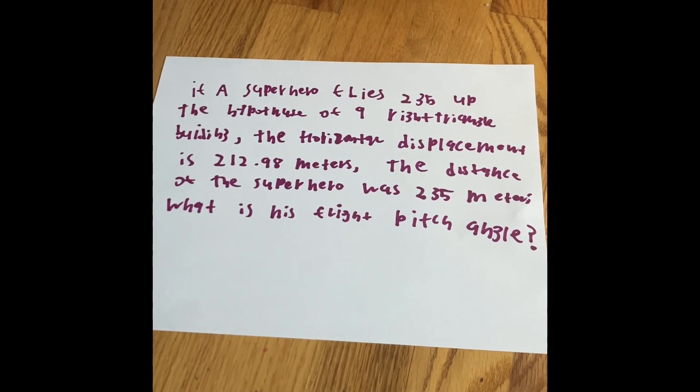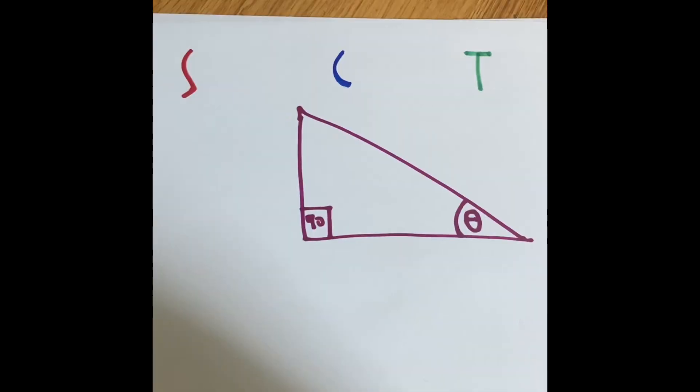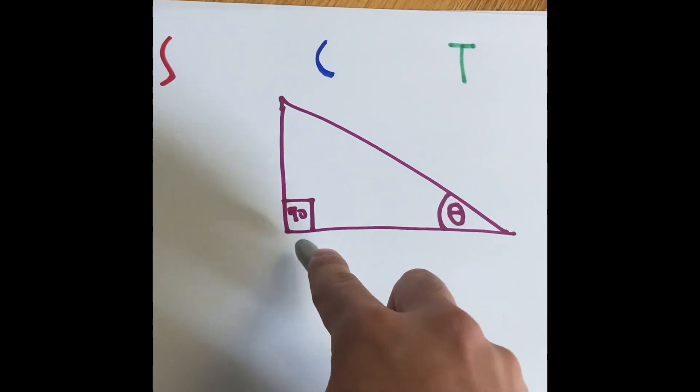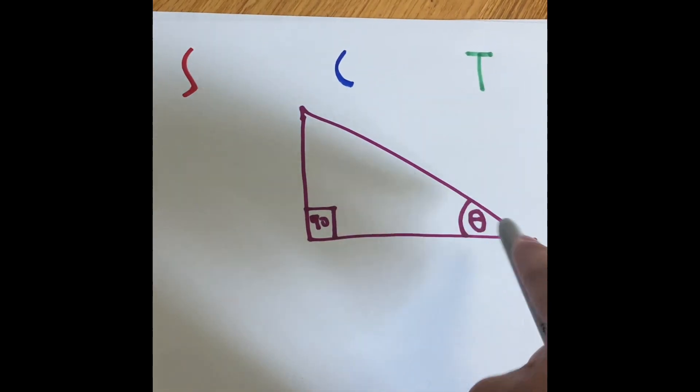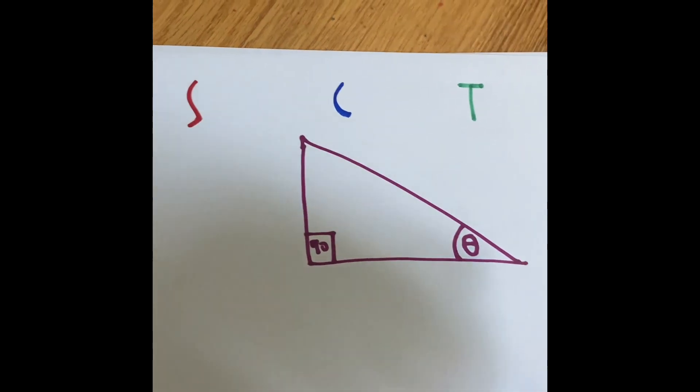But before we do that, we need to know what SOHCAHTOA is. So let's get started. We have a right triangle here. That 90 degree angle right there and that marked angle right there, also known as theta, one of the Greek letters.